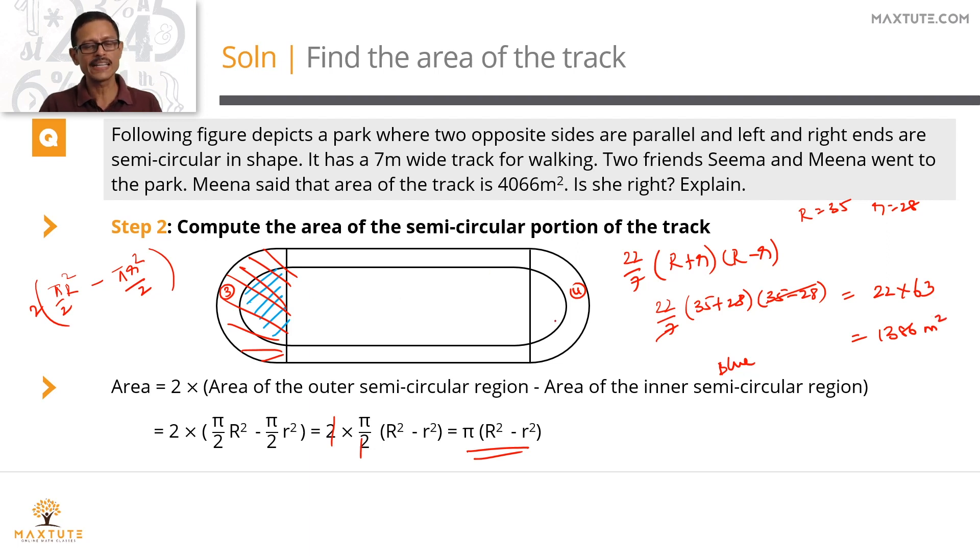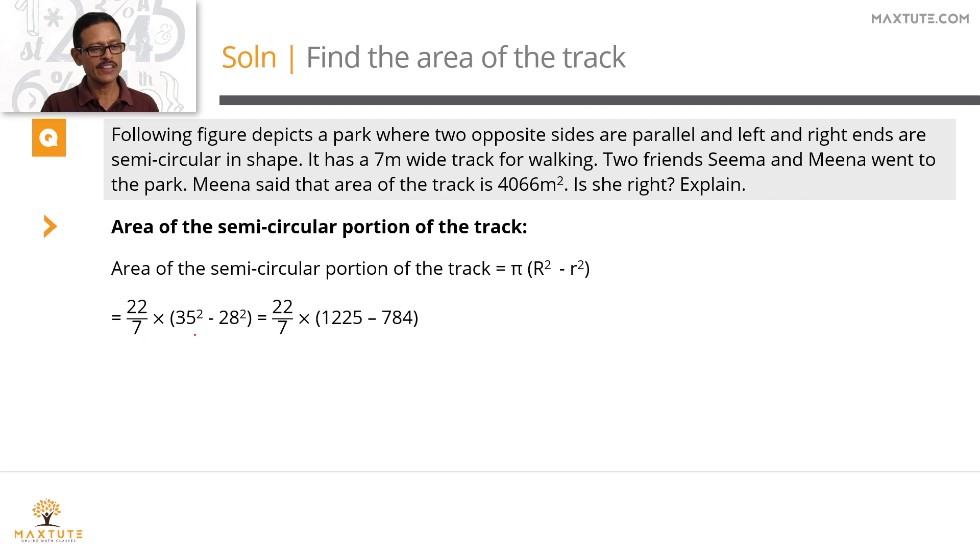So the semicircular walking track on either side, left and right, together that area is equal to 1386 meter square. Quickly summarize it in a printed form. 35 square minus 28 square, which will work out to 441. Gets cancelled to leave us with an answer 1386 meter square.